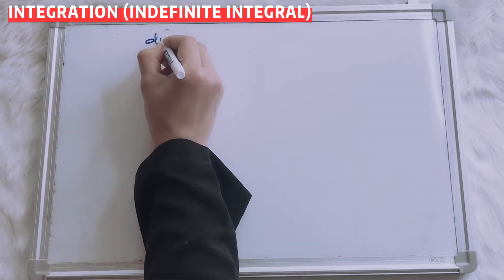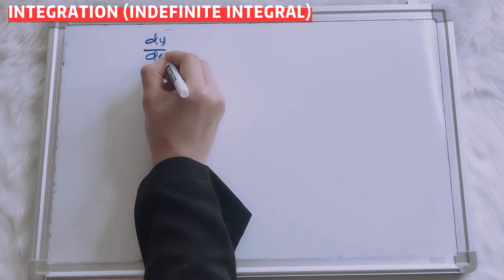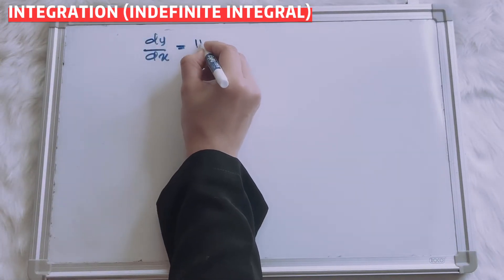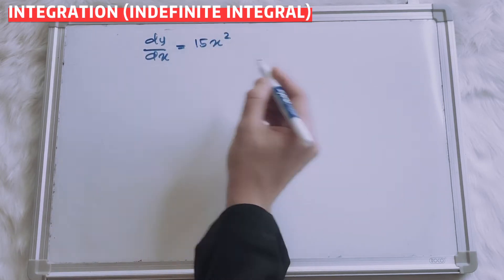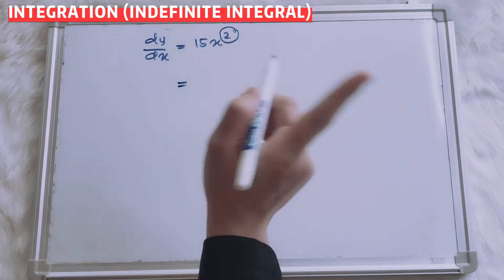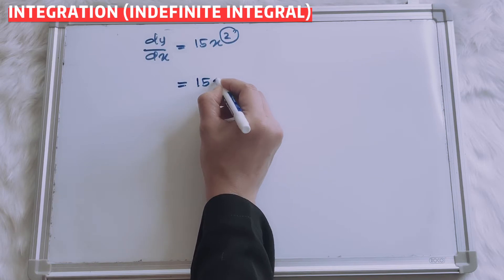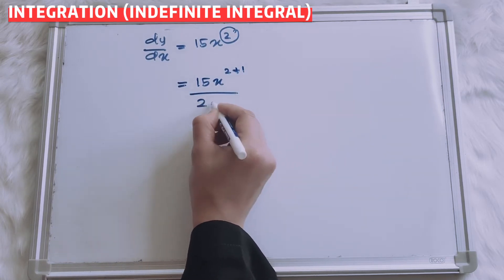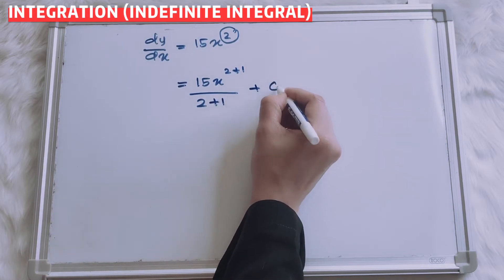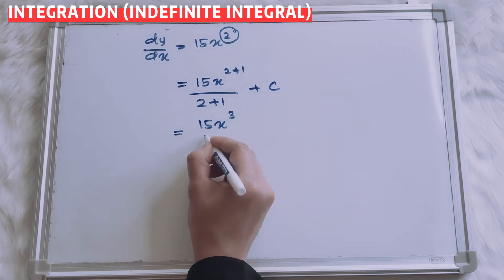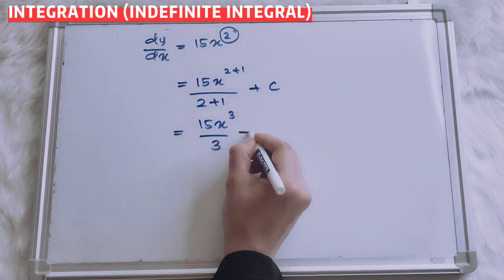Okay, let's say I give you here dy/dx equals to 15x squared. So, in integration, your power will be increased. You have to plus 1. So, here: 15x to the power of 2 plus 1, over 2 plus 1, plus C. So that means you have 15x to the power of 3 over 3, plus C.